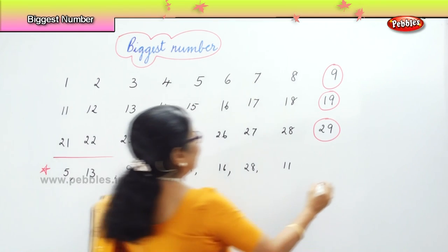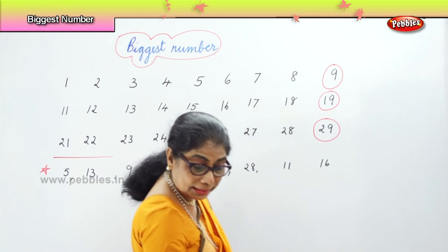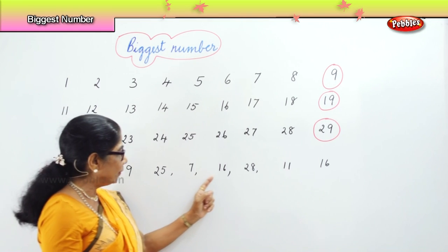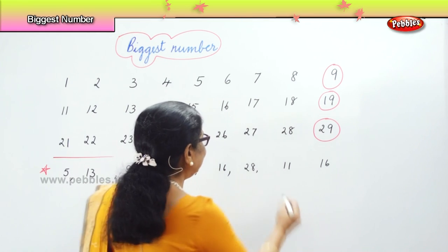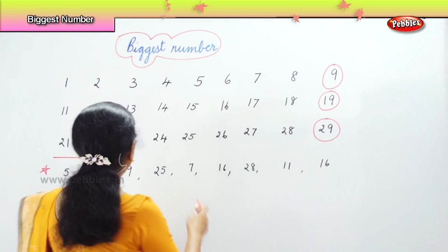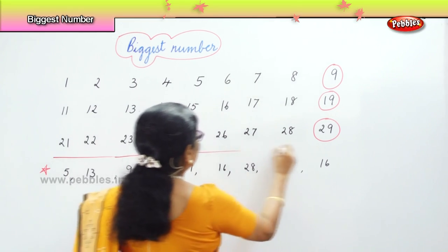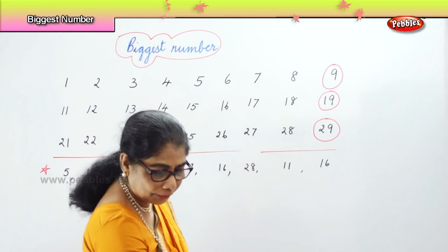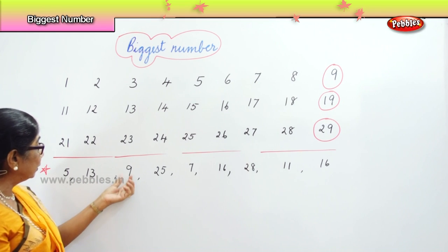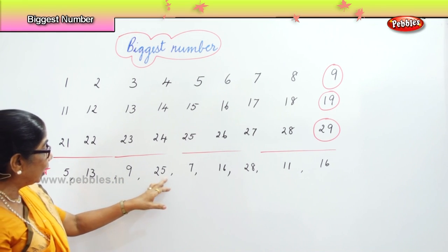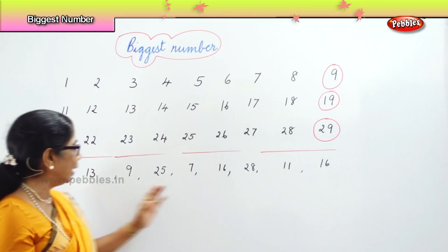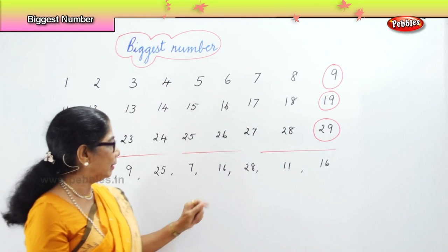One more number I'll put down — that is sixteen. Now in this list I have five, thirteen, nine, twenty, twenty-seven, sixteen, eighteen, eleven, and sixteen. How do I identify the biggest in this row? First, look at the single digit numbers: five, nine, seven. Then look at double digits — thirteen has one and three, twenty-five has two and five.